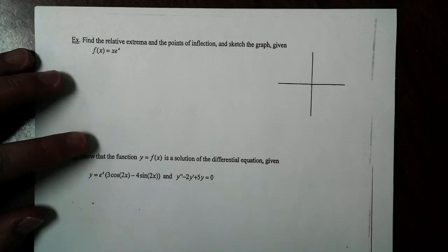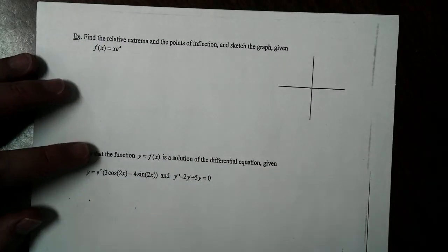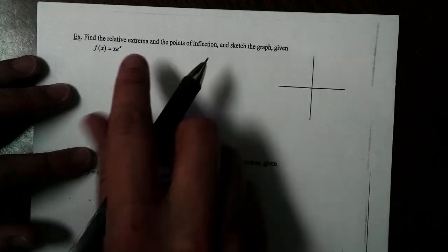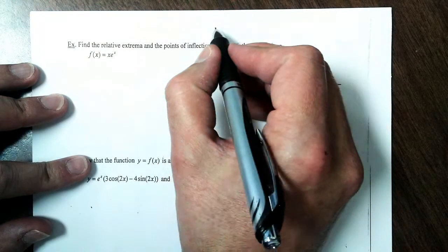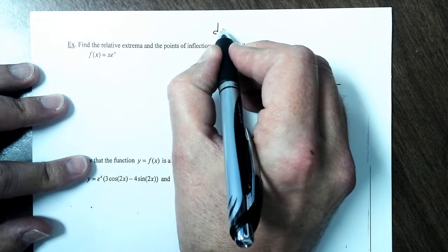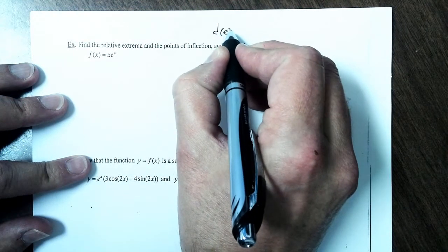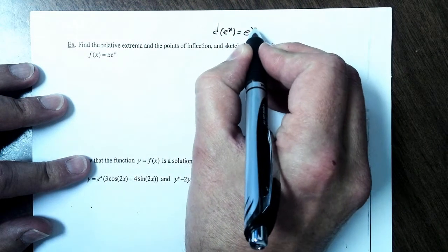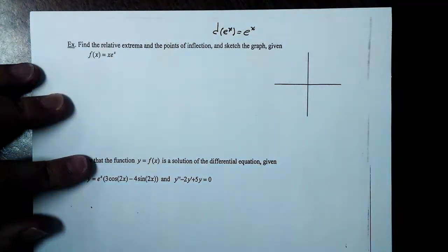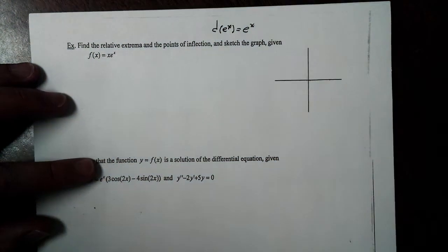Hi, welcome back. We're going to continue our discussion with the derivative of e to the x. Remember, our rule for today is the derivative of e to the x is just e to the x.